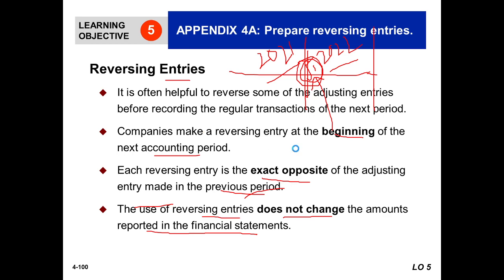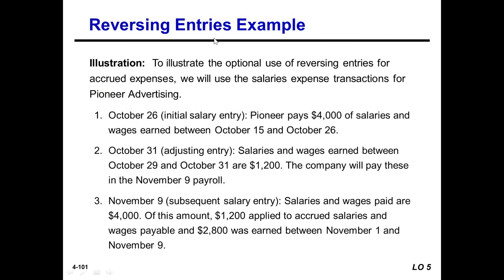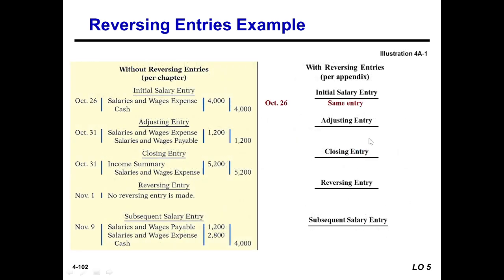To illustrate the optional use of reversing entries for accrued expenses, we will use the salaries expense transactions for Pioneer Advertising. On October 26, the initial salary entry — Pioneer paid $4,000 for salaries and wages earned between October 15 and October 26. Please look at the comparison: without reversing entries and with reversing entries.